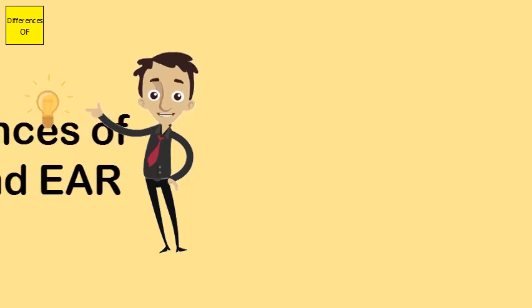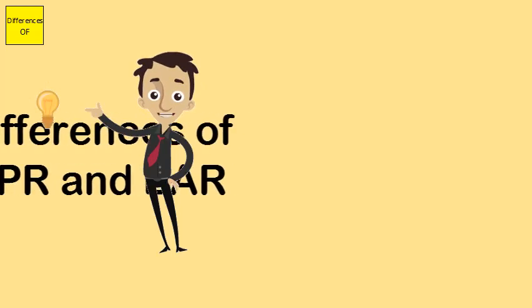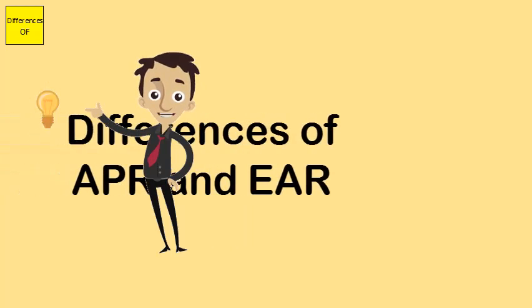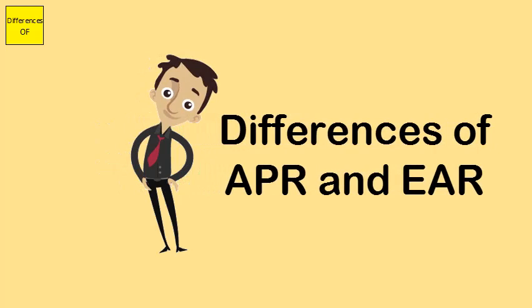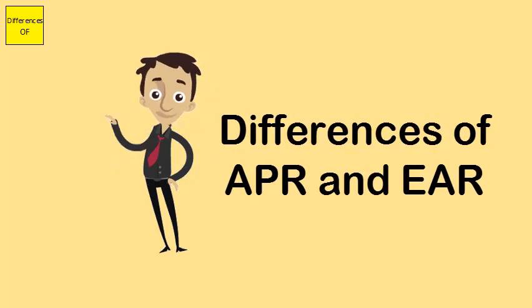Difference between APR and EAR. APR stands for Annual Percentage Rate; EAR stands for Effective APR.